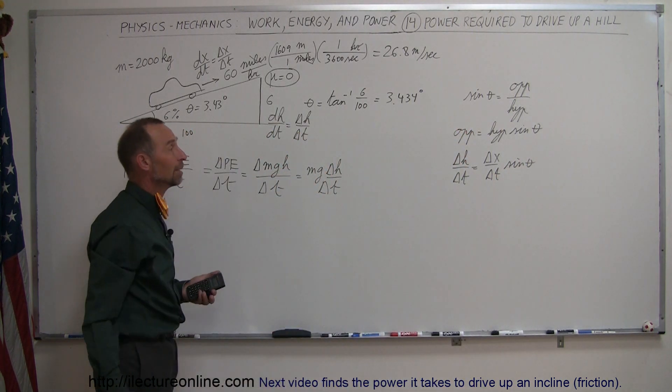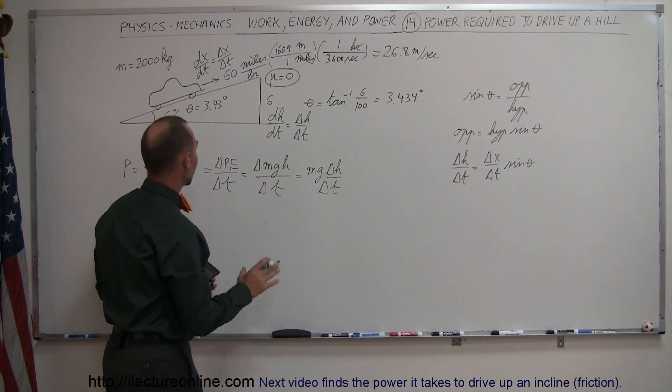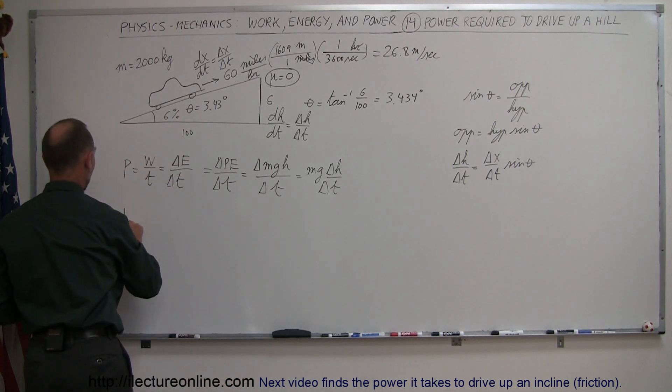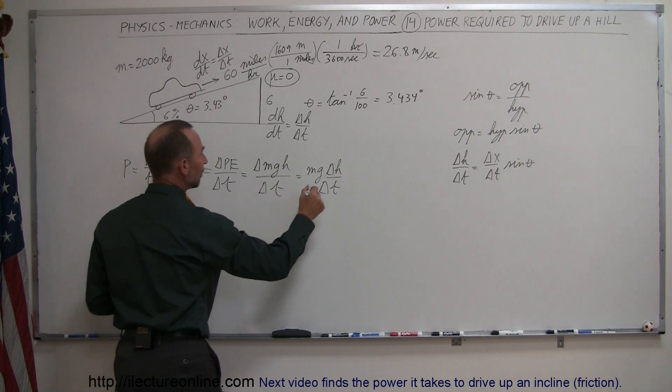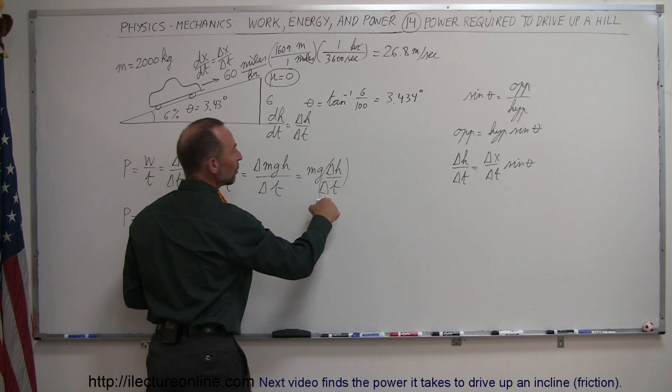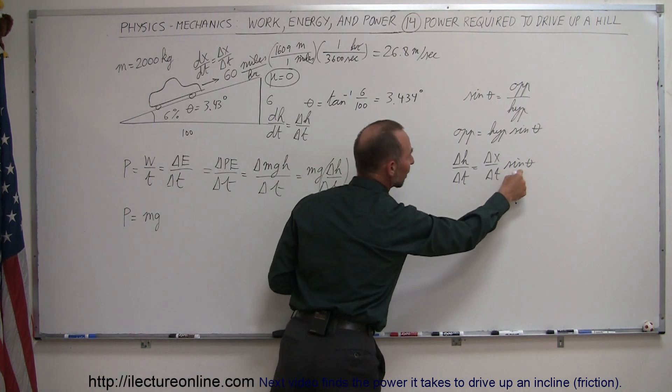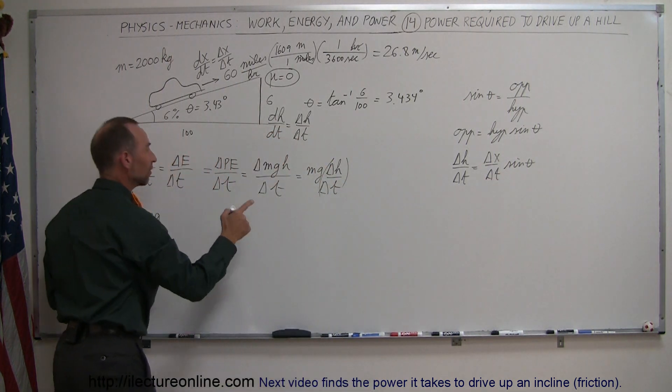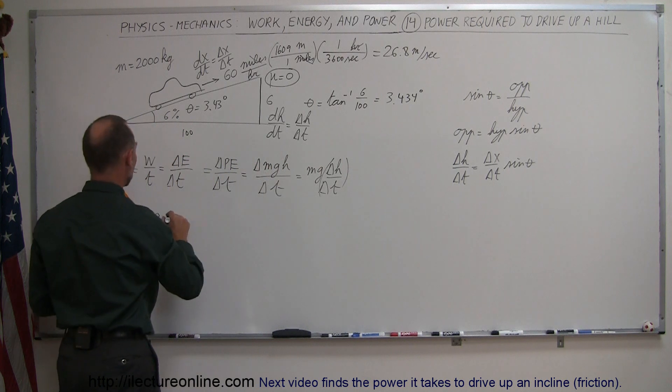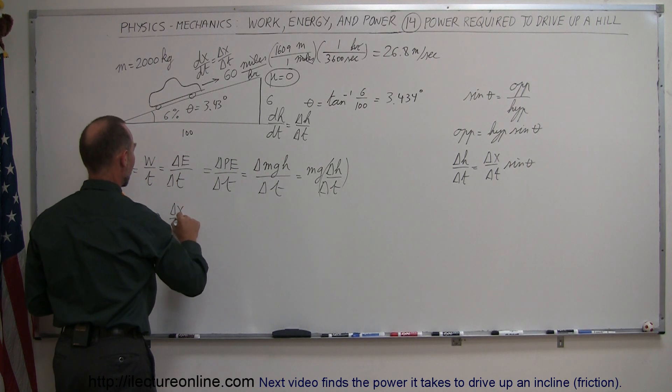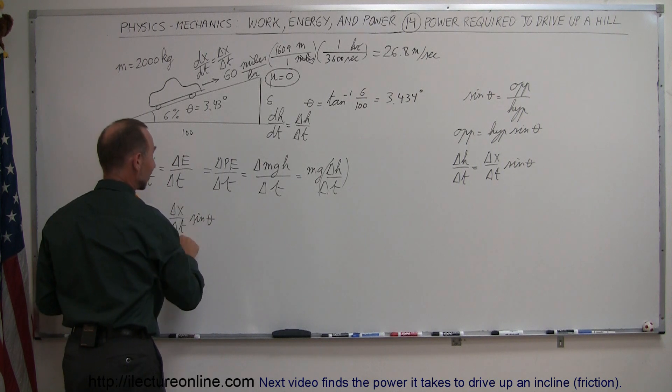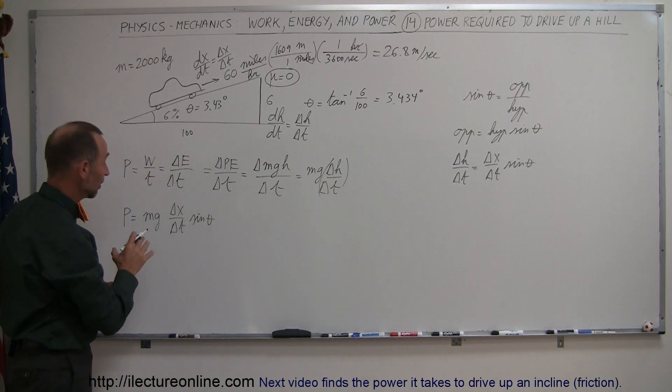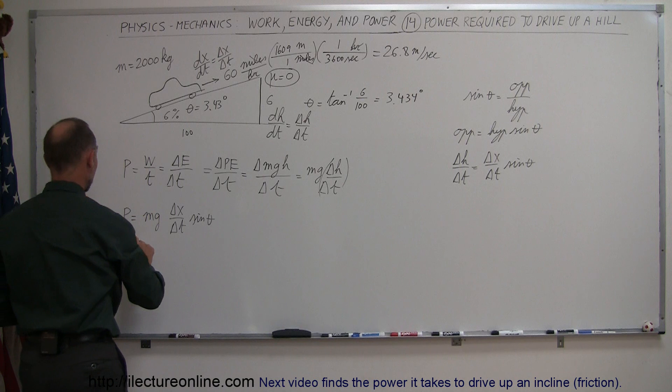So, what that means now is that the power required here is equal to mg times delta H delta T, which is equal to delta X delta T times the sine of theta. So we'll replace delta H delta T by what it's equal to: delta X delta T times the sine of theta. And of course delta X delta T again, that's simply the velocity of the car.